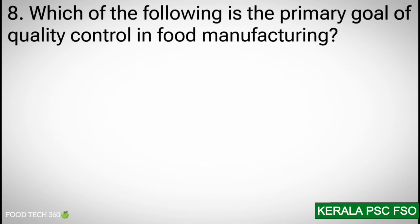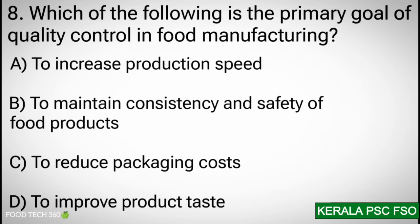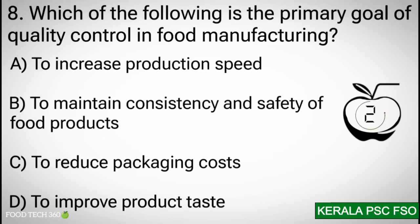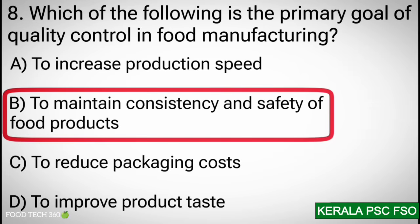Question 8: Which of the following is the primary goal of quality control in food manufacturing? Options: a) to increase production speed, b) to maintain the consistency and safety of food products, c) to reduce packaging costs, d) to improve product taste. Correct answer: b) to maintain consistency and safety of food products.